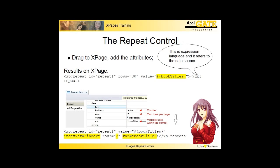Next I drag the repeat control to the XPage. The repeat control references the data source by using expression language. The expression starts with the hash sign, with an expression between curly brackets. In the expression you can do calculations, compare values, and transform values. You can also reference other elements on the page. The value attribute is used to define the data source — in my case, Book Titles.